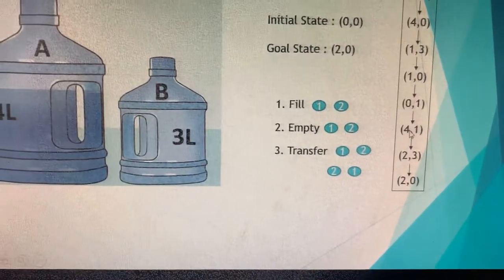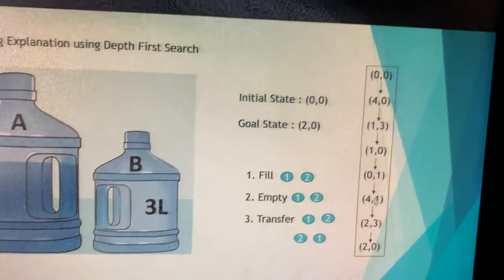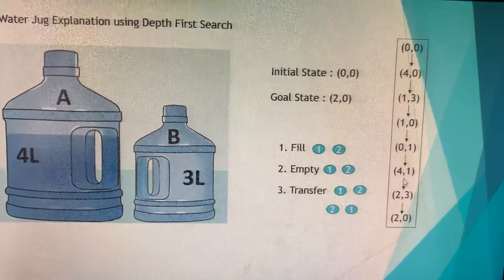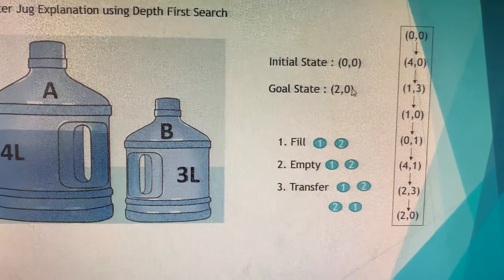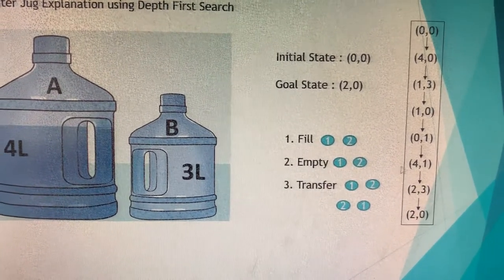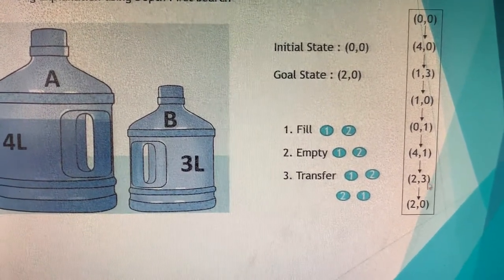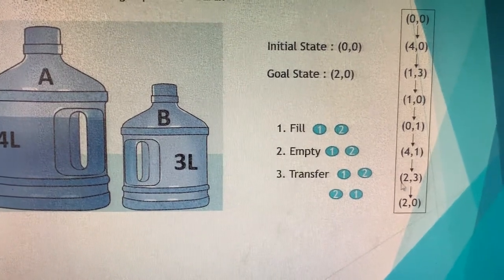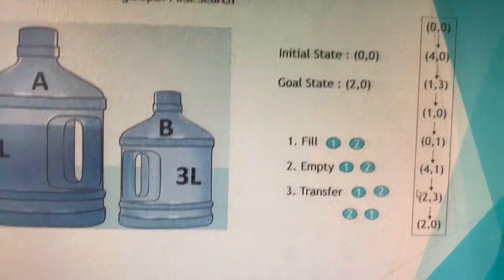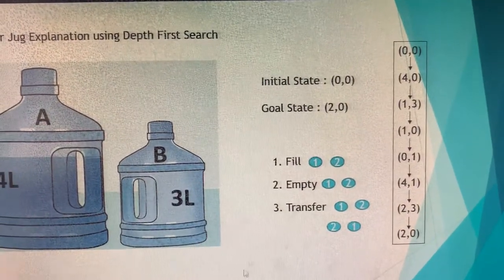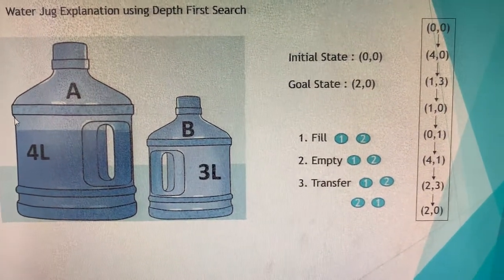From state (4, 1), four plus one equals five, and two plus three also equals five. We distribute the water to both jugs while keeping our goal state of (2, 0) in mind. We move two liters from jug A to top up jug B, so jug A has two liters and jug B has three liters, giving state (2, 3).